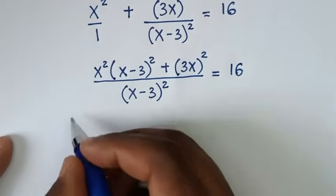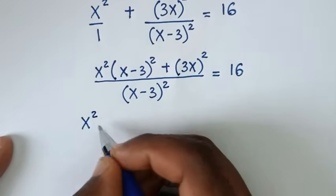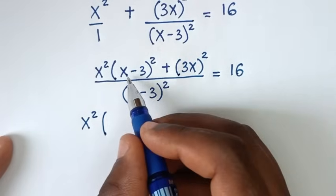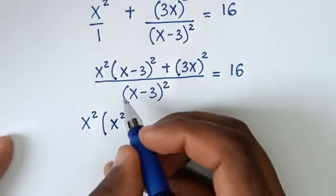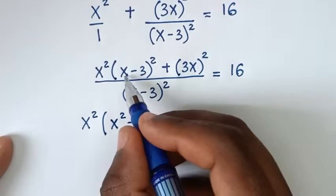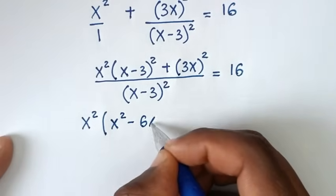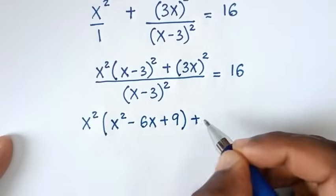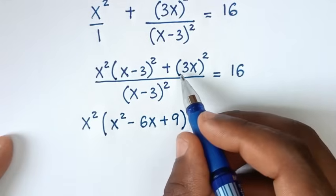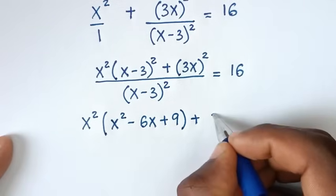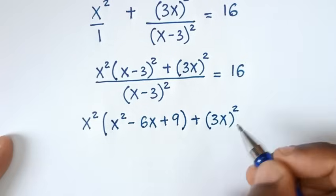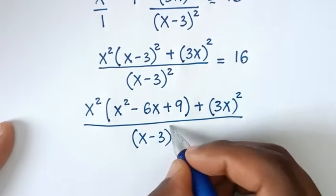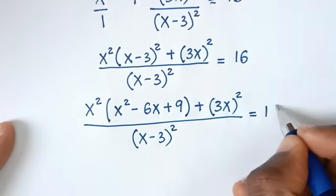In the next step, we expand x minus 3 bracket square: x times x is x square, minus 2 times x times 3 is 6x, then plus 3 times 3 is 9. So we have x square bracket x square minus 6x plus 9 bracket, plus 3x bracket square, over x minus 3 bracket square, is equal to 16.